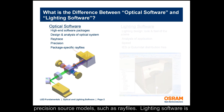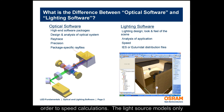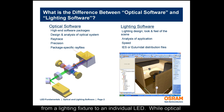Lighting software is used to model the application environment, such as a roadway or room. Assumptions are made about optical properties in order to speed calculations. The light source models only contain intensity versus angle information, and can be anything from a lighting fixture to an individual LED.